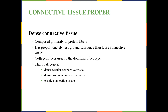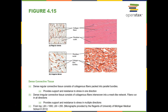Then we have dense connective tissues — also dense connective tissue proper. These have a lot more collagen fibers as well as elastic fibers. The collagen fibers determine the type of dense connective tissue. We have dense regular and dense irregular connective tissue. The difference is the location and direction the fibers run. In dense regular connective tissue, the fibers all run in one direction, giving protection along one line of stress. In dense irregular connective tissue, collagen fibers run in multiple directions, providing protection along multiple lines of stress.